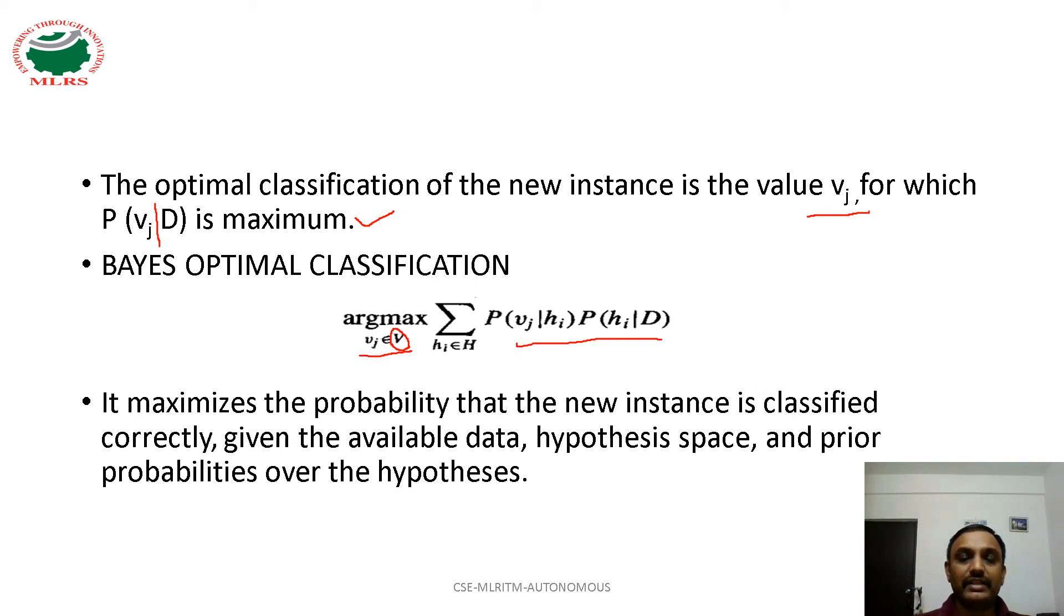This maximizes the probability that the new instance is classified correctly on the given available data, hypothesis space, and prior probabilities over the hypotheses.